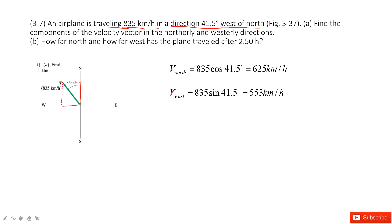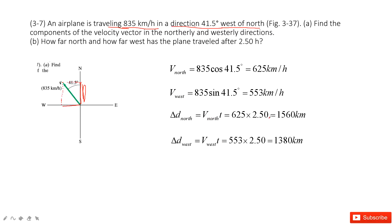Then, how far it traveled — we need to find displacement. We know the velocity in the west direction times the time, and the velocity in the north direction times time t gives the displacement at north. It's the same thing for the west: use the velocity at the west component times t, and then we get it.